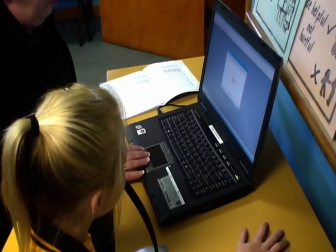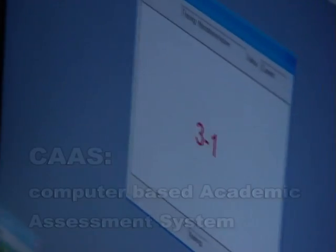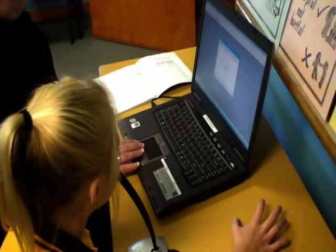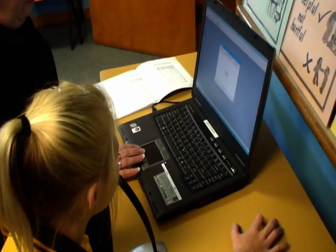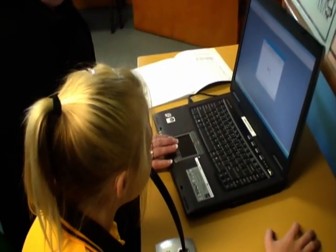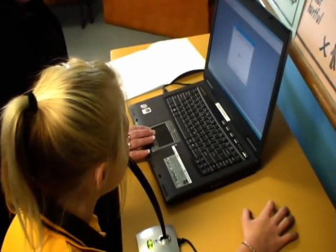The second last component of the QuickSmart lesson is the CAS computer program and the independent work. Here one student goes onto the computer to complete their activity and the other student does independent written work. Then they swap over.